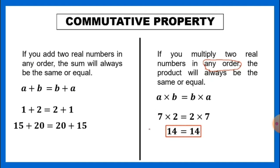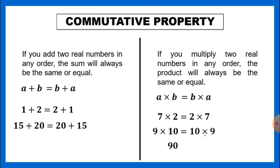Another example: 9 times 10 — if you change their order to 10 times 9, they still get the same result: 90. So commutative property applies to both addition and multiplication. We cannot apply this in subtraction and division because if you change their order, the result will change.